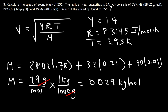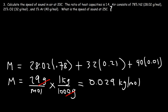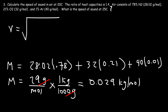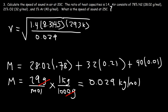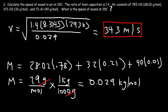Now we have everything we need. Plugging in: 1.4 times 8.3145, multiplied by 293 Kelvin, divided by 0.029 kilograms per mole. This works out to be 343 meters per second — that's the speed of sound in air at 20 degrees Celsius.